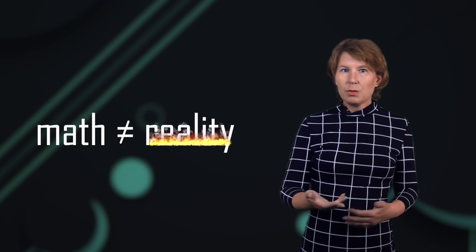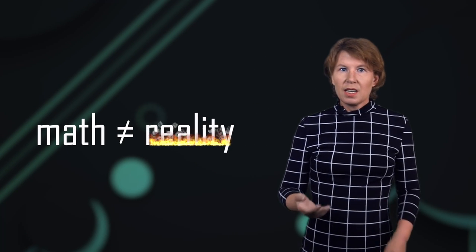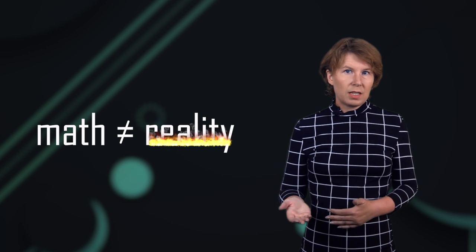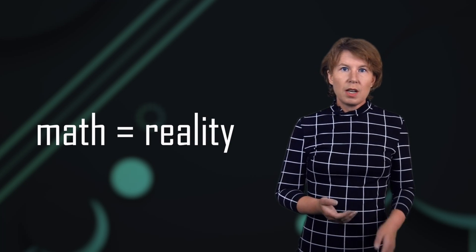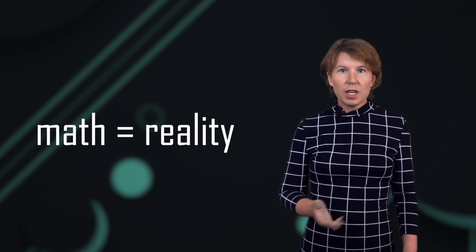But those mathematical structures in our theories already describe all our observations. This means just going by the evidence, you don't need anything more. It's therefore possible that reality actually is math, that there is no distinction between them. This idea is not in conflict with any observation.